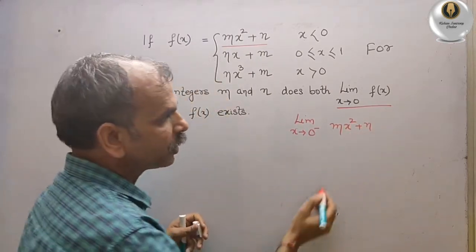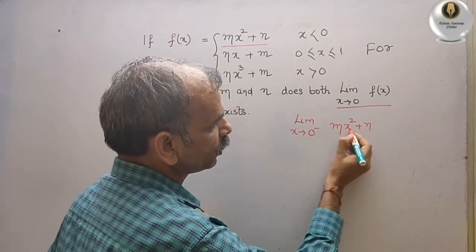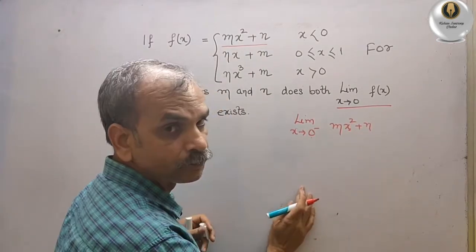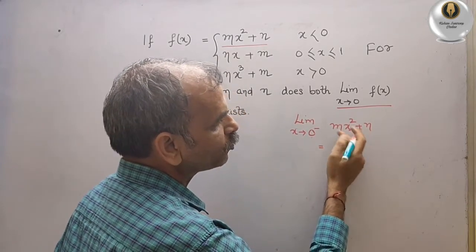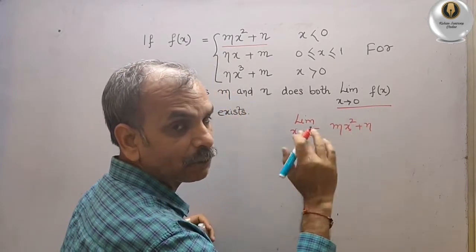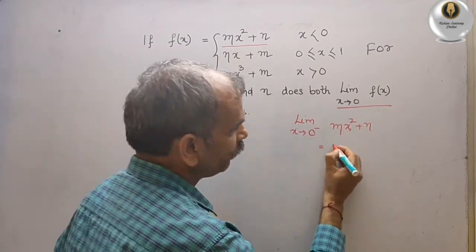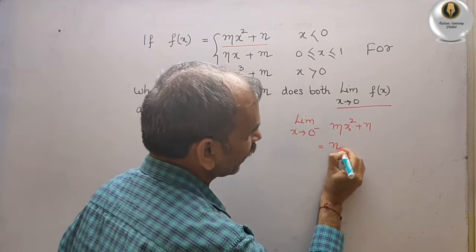Now put the value 0 here. We will get m times 0 squared, that means 0, so we will get m.